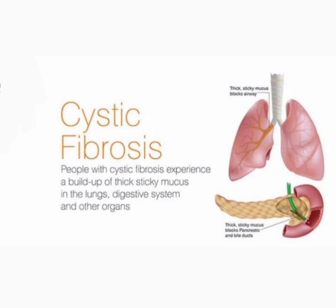For failure to thrive as the chief complaint: onset, course, duration, what makes it better or worse. Ask about early appetite losses, losses by vomiting and diarrhea, and evidence — how did you notice it? By clothes, weight, and peers' growth chart. This covers failure to thrive history with onset, course, duration, and aggravating or relieving factors.